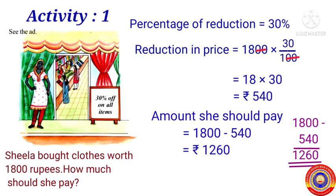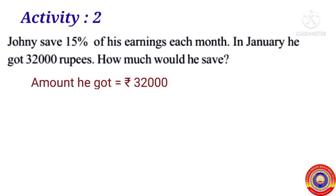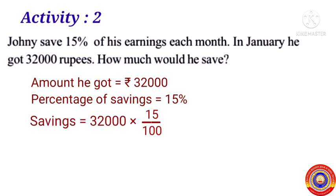Is it clear for you children? Next, activity number two: Johnny saves 15 percentage of his earnings each month. In January he got 32,000 rupees. How much would he save? It is given that the amount he got is equal to 32,000 rupees and the percentage of his savings is equal to 15 percentage.